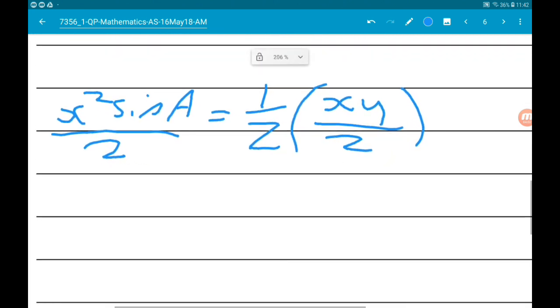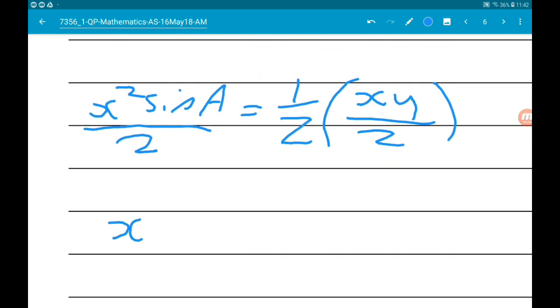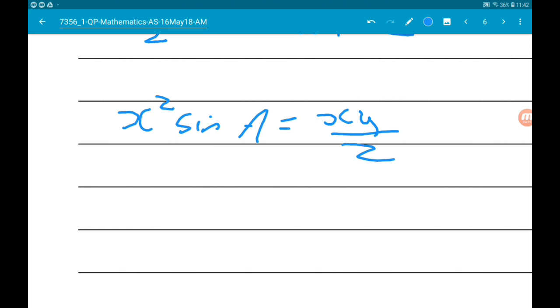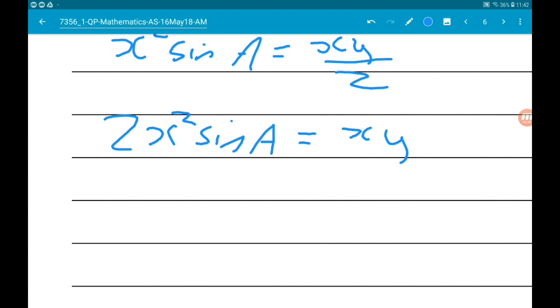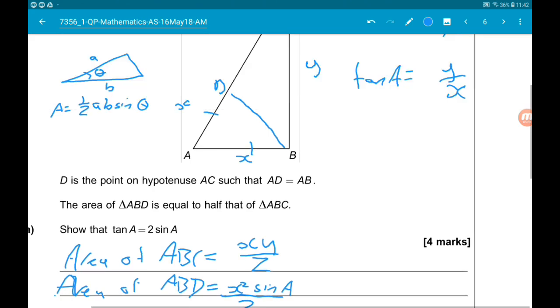Okay. So we could multiply both sides by 2, so we would get X squared sine A is equal to XY over 2. Multiply both sides by 2 again, we get 2X squared sine A is equal to XY. Dividing by X gives us 2X sine A equals Y, which is equal to Y over X, which remember, was tan of A.